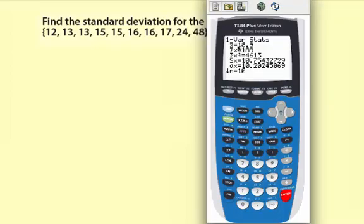Okay, let's take a look. Here's the mean of the data, the x bar. And the standard deviation is down here. It's 10.2.